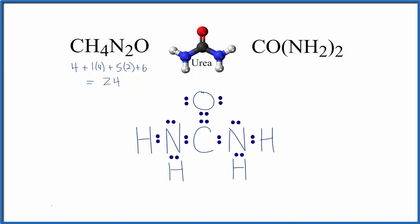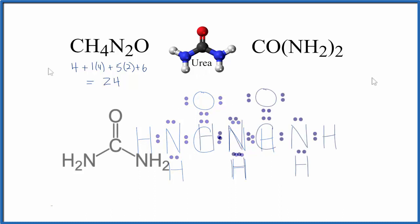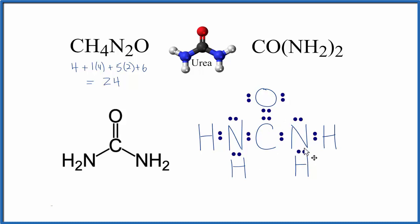We could also write this using lines instead of pairs of electrons to show the structure. If we wanted to make sure that this was the best arrangement for these atoms, we could check the formal charges and we'd find the formal charges for all of these elements here. Those would be zero.